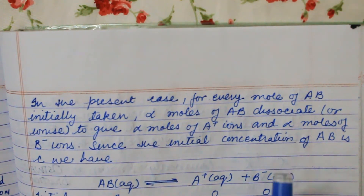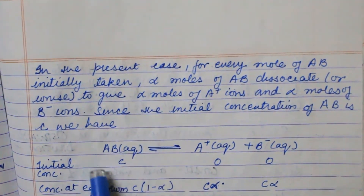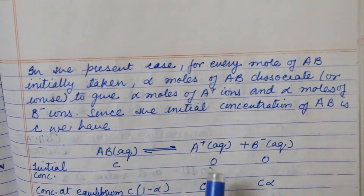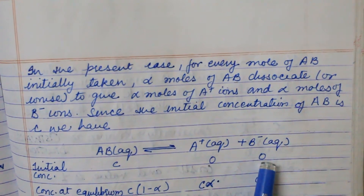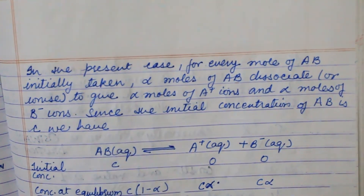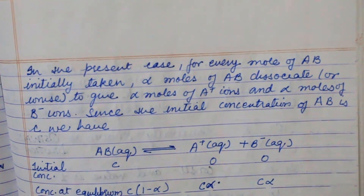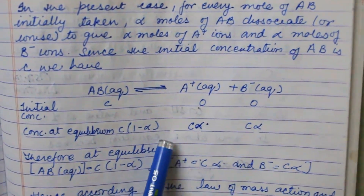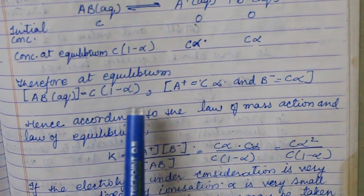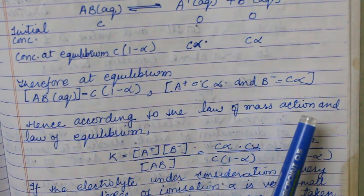Since the initial concentration of AB is C, at the initial state only the reactant is present and the product concentration is zero, as it is not yet formed. After the reaction proceeds to equilibrium, the concentration of AB is C(1 − α), and the concentrations of A⁺ and B⁻ are each Cα.